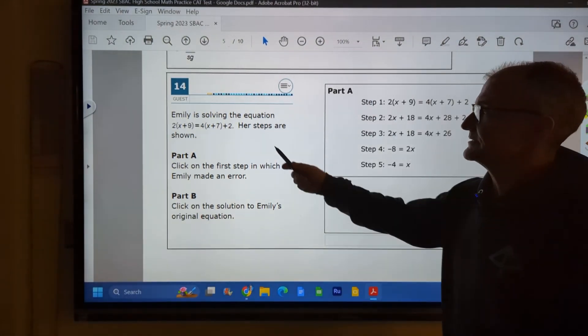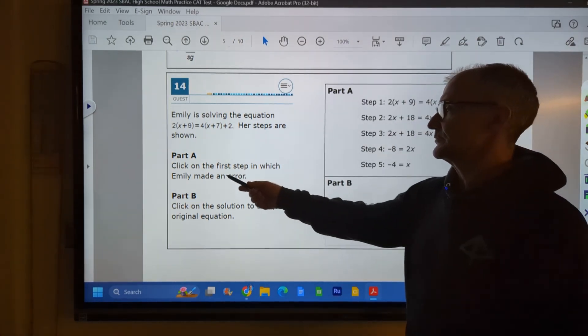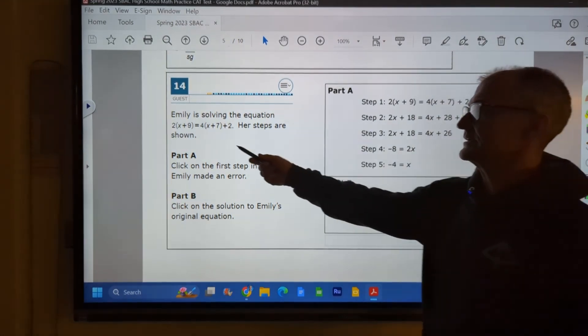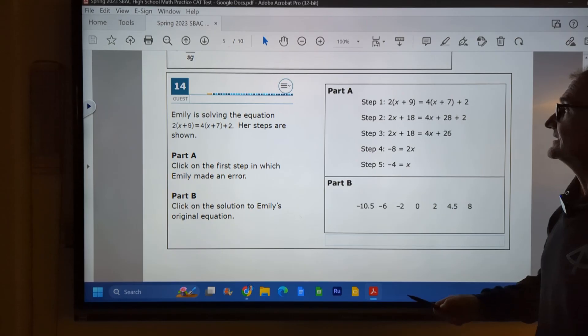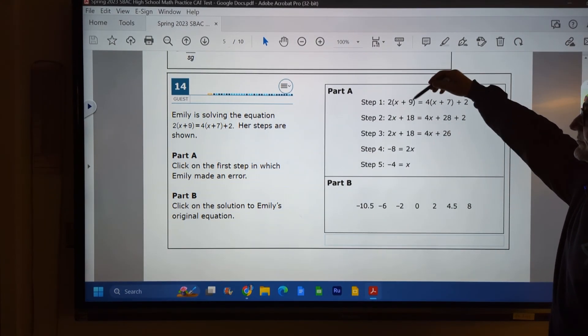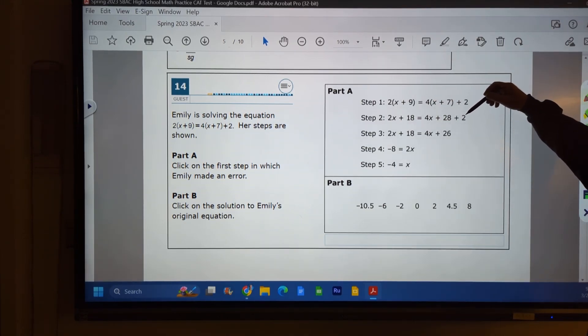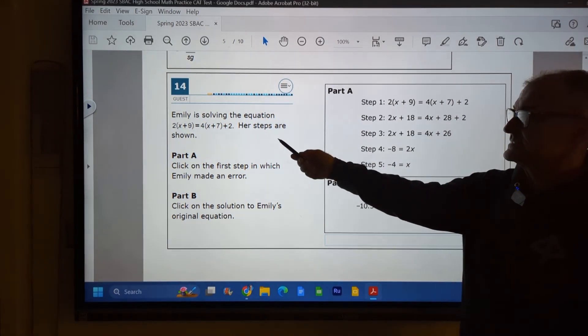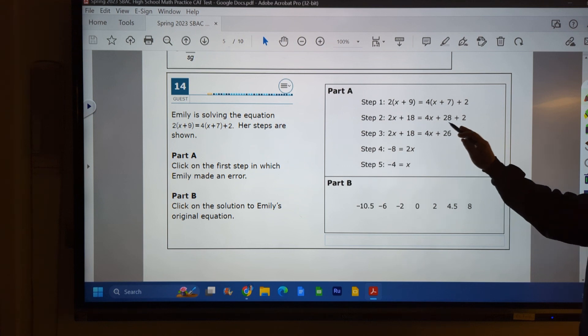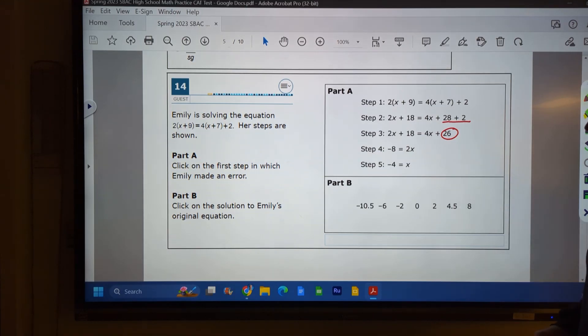All right, here's a little bit of algebra right here. Emily's solving this equation. Her steps are shown. Click on the first step in which she made an error. So before I even start, I'm looking over here, and I know the first thing I'm gonna do is distribute. So let's see if Emily did that. Takes that 2 and distributes it through the quantity to get 2x plus 18 is equal to 4x plus 28 plus 2. That's correct. My next order is I'm gonna combine similar terms. 2x plus 18 is equal to 4x. 28 plus 2 is not 26. So there's her error right there.